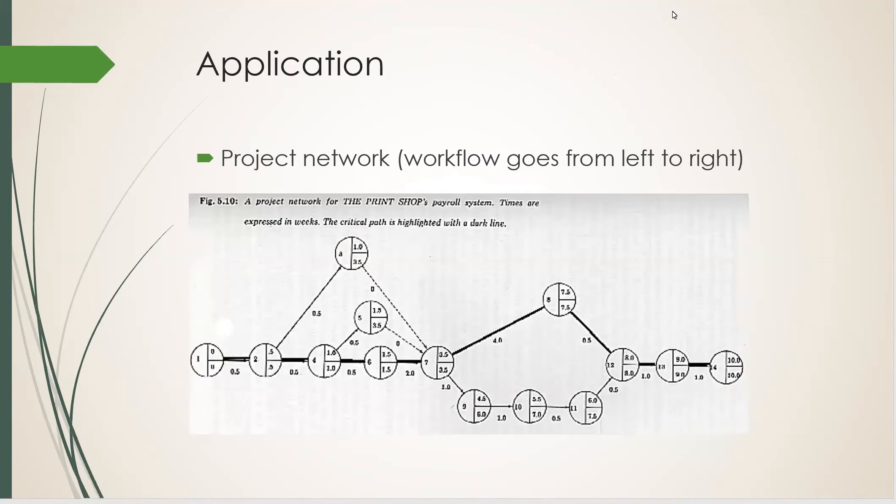A real-life example of a directed graph is a project network, showing what tasks must be completed before you can start another that's waiting for them. In a project network, the workflow goes from left to right. It's not possible to go from right to left.